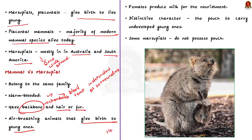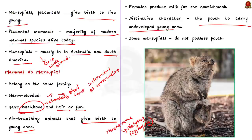Coming back, mammal and marsupial females produce milk for the nourishment of their young ones. The distinctive character of a marsupial is that they give birth to undeveloped young ones. Note that while all marsupials give birth to undeveloped young, only some marsupials have a pouch. Marsupials like wombat and kangaroo have a pouch, while the short-tailed opossum, which is also a marsupial, does not have a pouch.